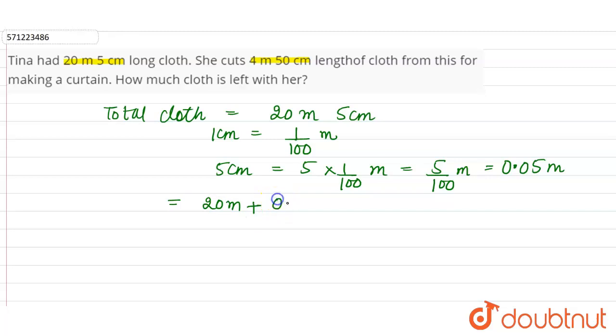So this is the total cloth she had. Now she cuts 4 meter 50 centimeter length of the cloth from this. So used cloth will be equal to 4 meter 50 centimeter.